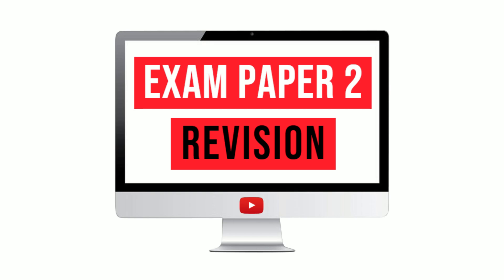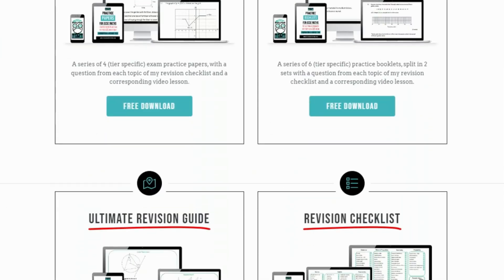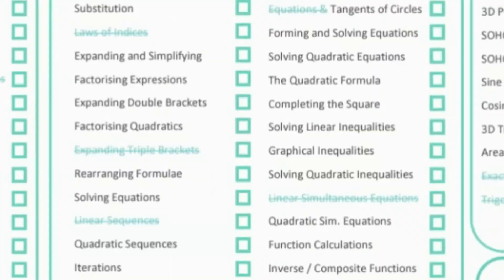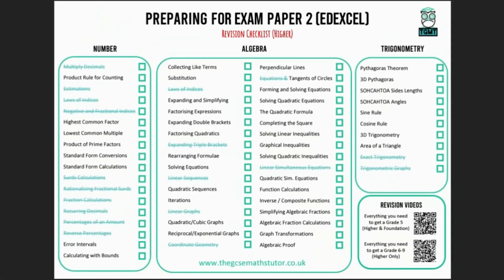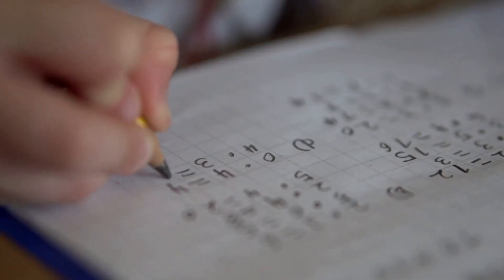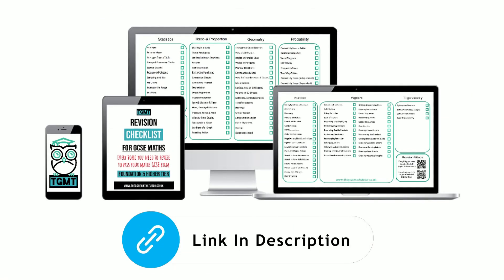It's time to turn our attention to Paper 2, and the way we do that is by identifying which topics we need to focus on. My Paper 2 revision checklists are now ready for both EdXcel and AQA in both the higher and foundation tier. The difference with these checklists is that they've been updated to exclude all the topics that appeared on Paper 1. Now, this doesn't mean that Paper 1 topics cannot come up again, but the probability they will appear is a lot lower. So if you want to get a head start on your Paper 2 revision, click the link in my description to get your free download now.